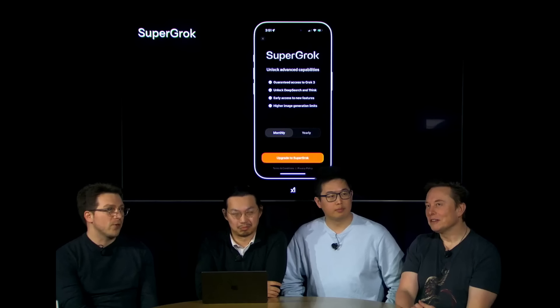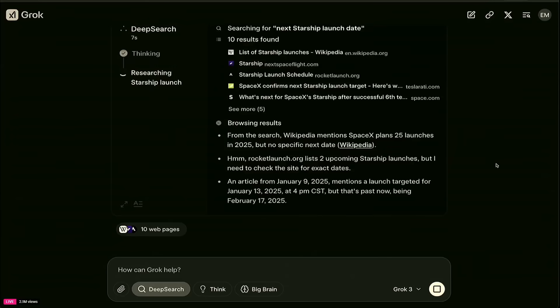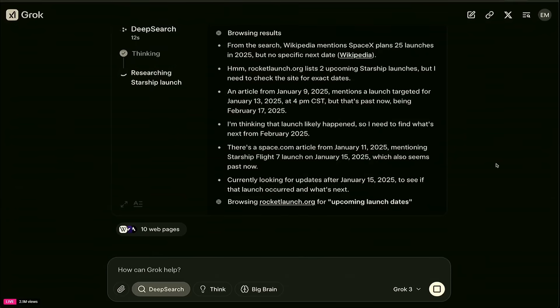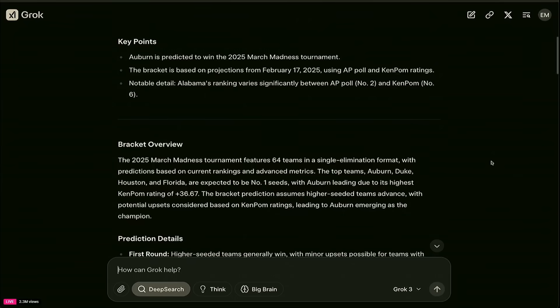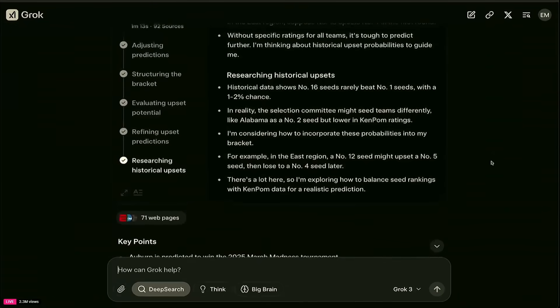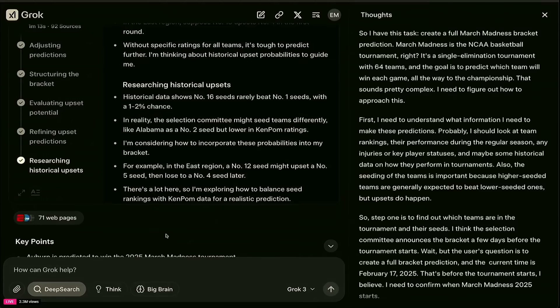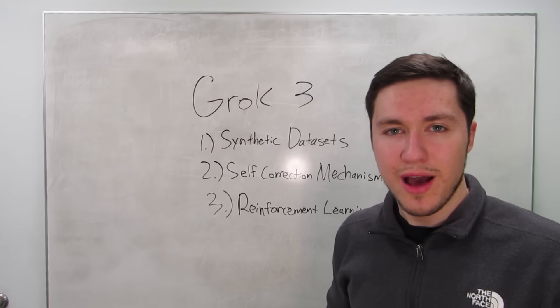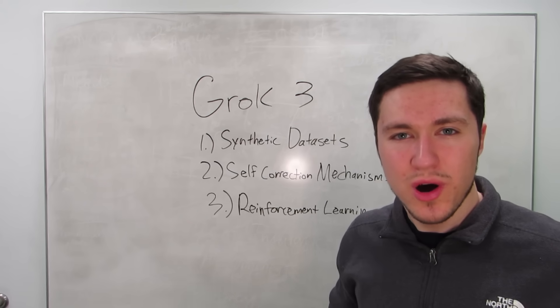XAI also released a version of Grok separate to XAI premium called Super Grok that gives you access to Grok 3's more agentic features like Deep Search. For $30 to $40 a month, you get access to Deep Search, which is a next-gen search engine that's supposed to be a competitor to Google that helps you save hours of time by essentially searching information for you online and doing very deep research. Not to be confused with OpenAI's deep research, Perplexity's deep research, or even DeepSeek.